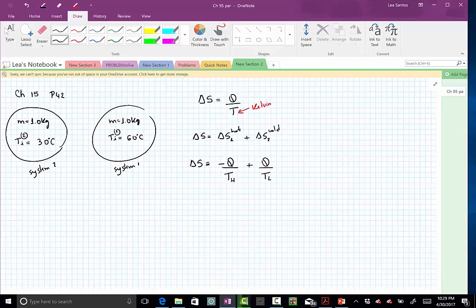When the system reaches equilibrium, what is going to be the final temperature? Well, since both systems have the same masses, the final temperature will be something between the two. So, the final temperature of the system will be 30 plus 60 divided by 2. So, 45 degrees Celsius. This is what I know.